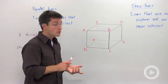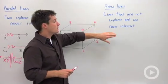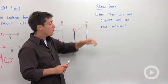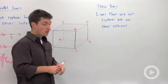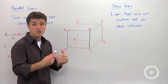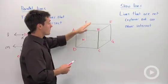Skew lines are lines that are not coplanar and therefore can never intersect. So if we looked at this cube here where we assume that we have six faces and that their opposite faces are parallel.